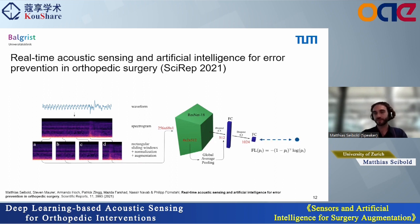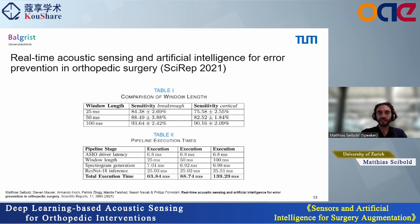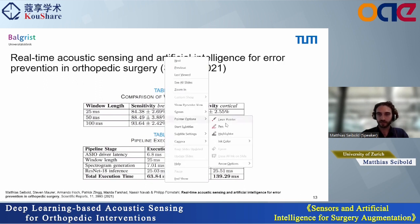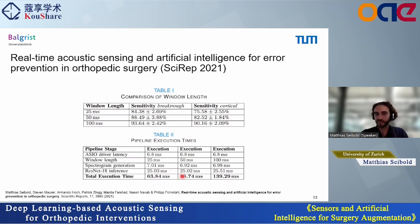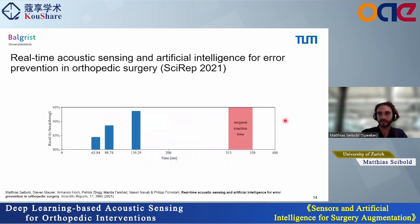We used the focal loss function to account for class imbalance inherent to the dataset — many drilling samples but very few breakthrough events. We achieved accuracies up to 94% with 100-millisecond windows. Decreasing the window length to 25 milliseconds, corresponding to a total pipeline execution time of around 64 milliseconds, we still achieved a sensitivity of around 84% for drill breakthrough detection. We also showed that our system is many times faster than the human reaction time.